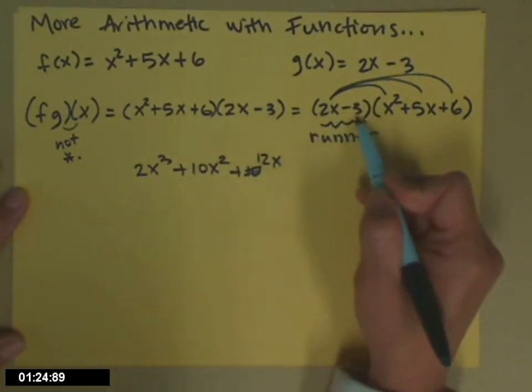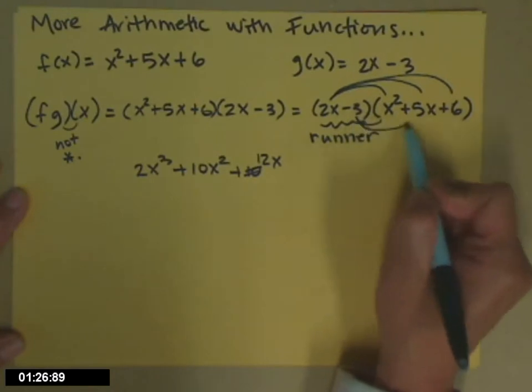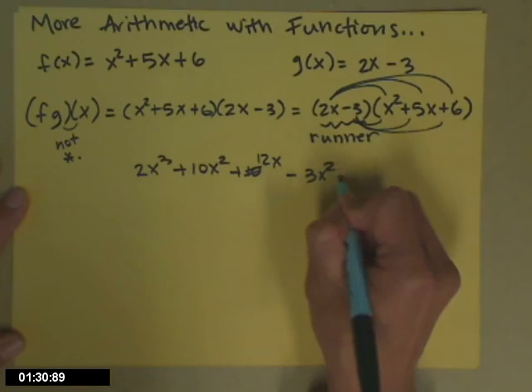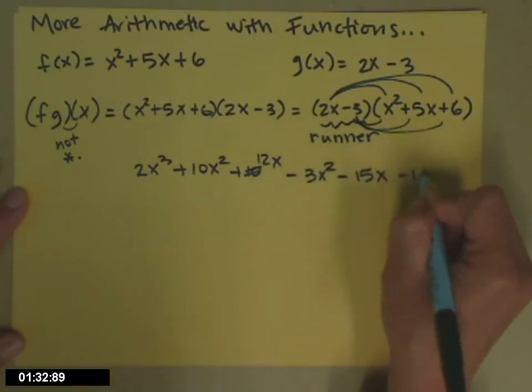Then I take the negative 3 and I run it through all of the terms. So now I'll get negative 3x squared minus 15x minus 18.